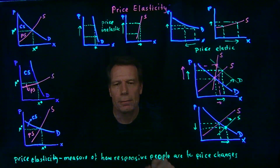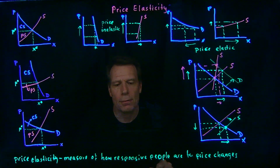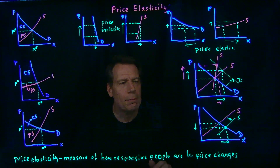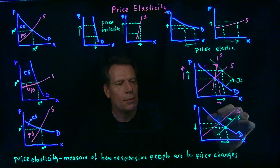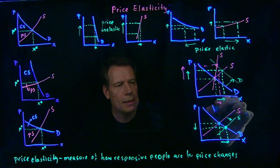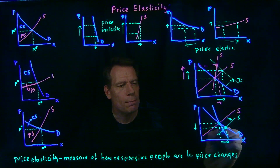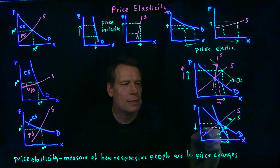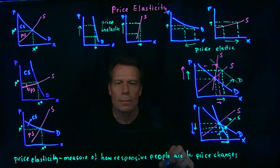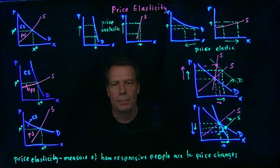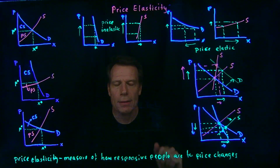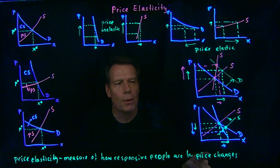But what determines how big the price change is relative to the quantity change as a result of a shift in the supply curve? Again, it depends on the price elasticity of one of those curves. Suppose the demand curve had been steeper — through the original equilibrium. Then the new intersection of demand and supply would show that the price would have fallen more and the quantity would have increased by less. So the more price inelastic the demand curve is, the more a shift in supply will cause prices to change, and the less it will change quantities.